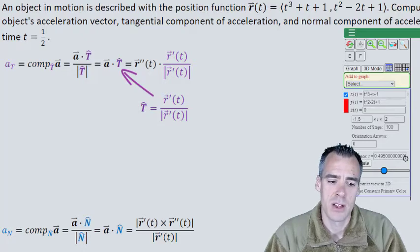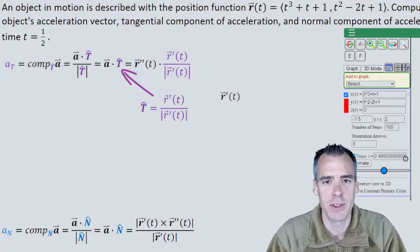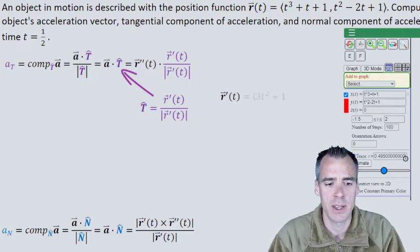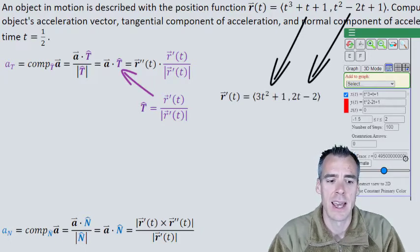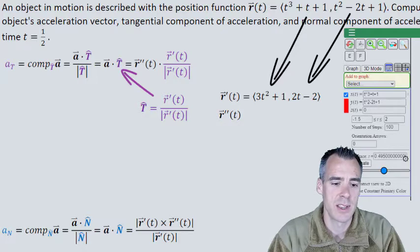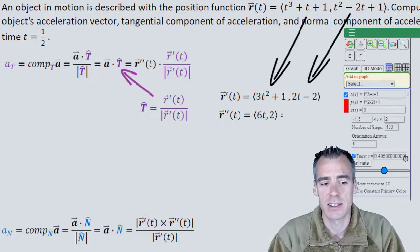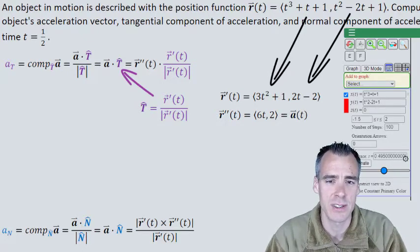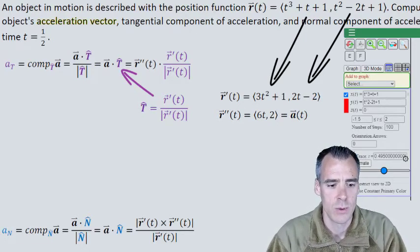So let's find it. r'(t), we just take the derivative of each component with respect to time. r'(t) = (3t² + 1, 2t - 2). For r''(t), we take that derivative again: (6t, 2). We know this is the second derivative of our position function, so it is in fact our acceleration vector, which was part of the problem statement. We're already making some progress here.